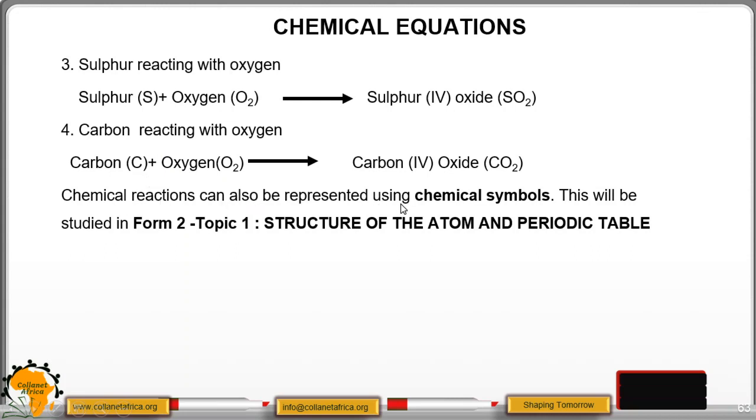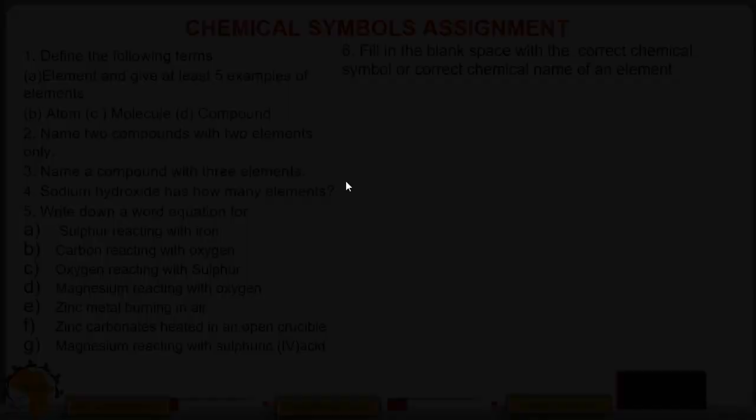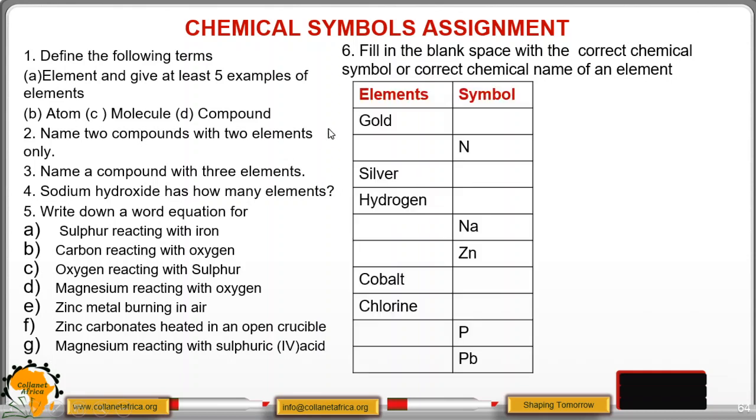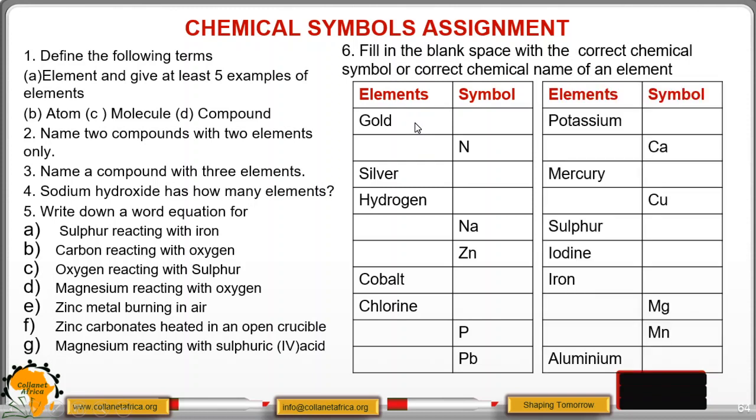Chemical reactions can also be presented using chemical symbols. This will be further done in form 2 topic 1. That is the structure of the atom and the periodic table. Thank you and welcome now to the assignment. Make sure you know how to define all these terms. Know how to write down the word equation. If possible, you can go ahead and use the symbols. And then when you come to question 6, remember we have the elements and symbols. Make sure that these are in your fingertips. Thank you and wish you the best.